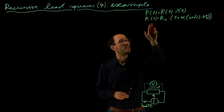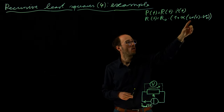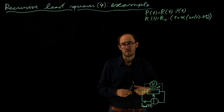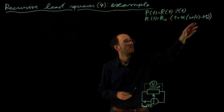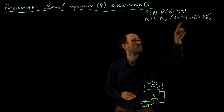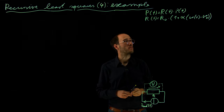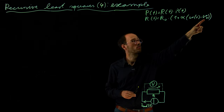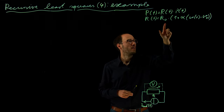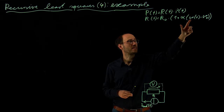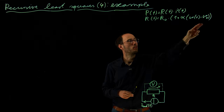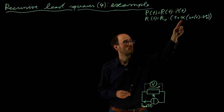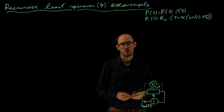For example, the resistance itself can be dependent on the temperature, which we denote here as theta. And in the most simple model variant, in order to represent the temperature impact on the resistance, we can consider a linear relationship. So we have some baseline resistance R₀ at some baseline temperature theta₀, which could be room temperature. And if the actual temperature theta of that resistor deviates from theta₀, there will be a linear increase or decrease of the resistance value with respect to the scaling parameter alpha, which is also called the temperature coefficient.